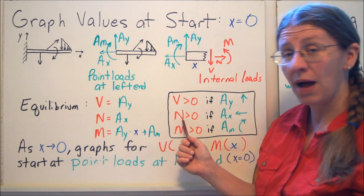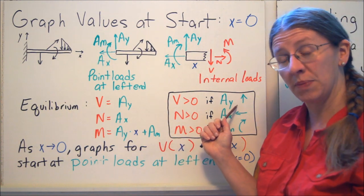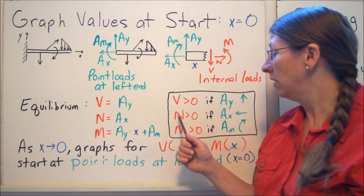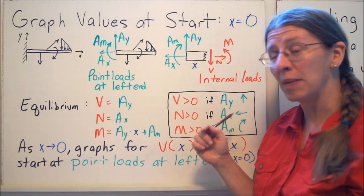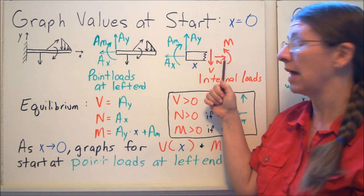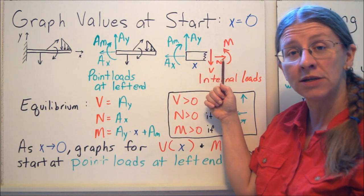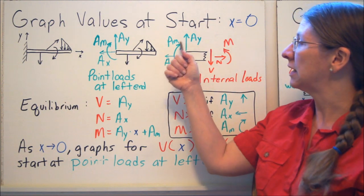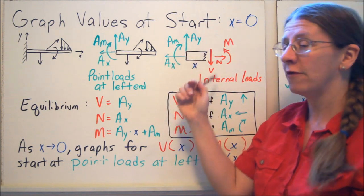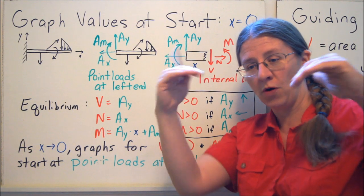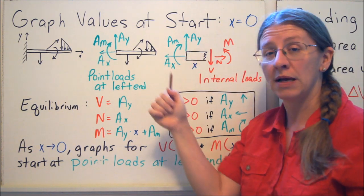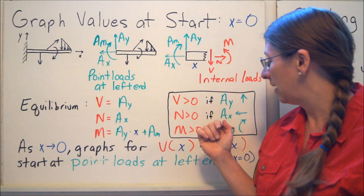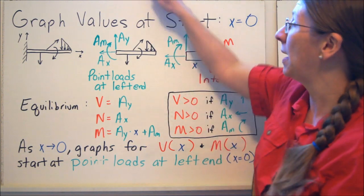Specifically, V will start positive when AY is up, V will start negative when AY is down, and N will start positive if AX is to the left. Remember that that balances this N. We're assuming our beam is in tension for positive numbers. And M is positive if AM is like this. And if you look at this little bit of a beam, you can see that when both of these moments go like this, you'll have it bending into a positive thing. So that will be when your graph starts positive.